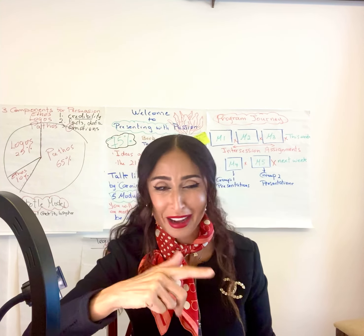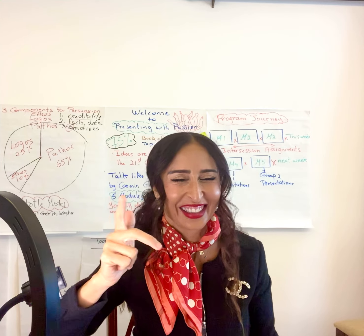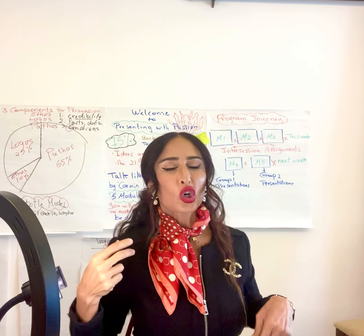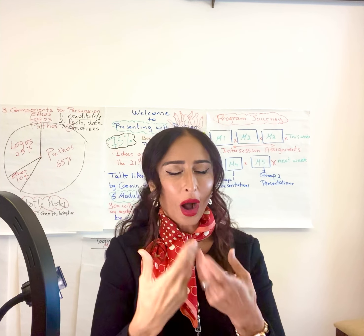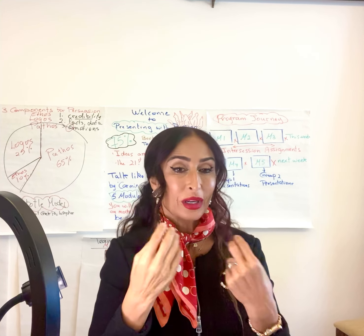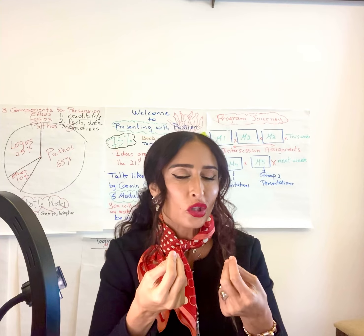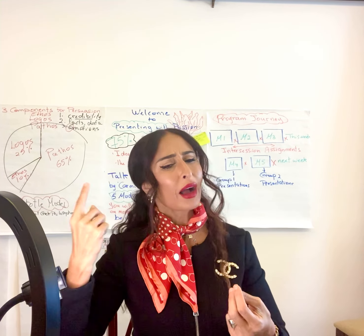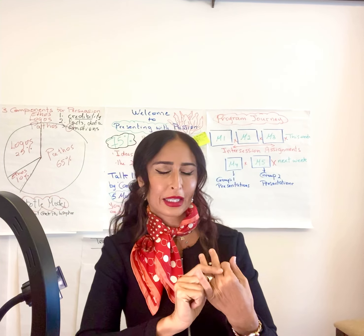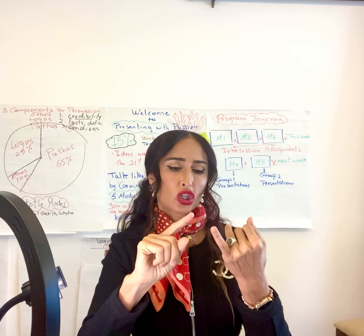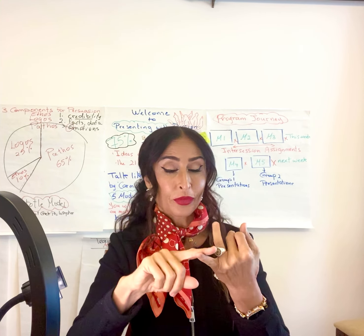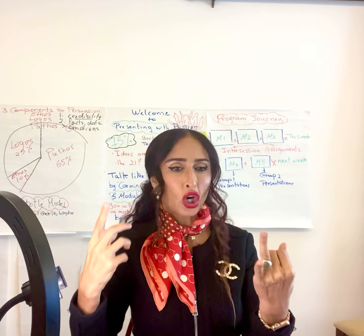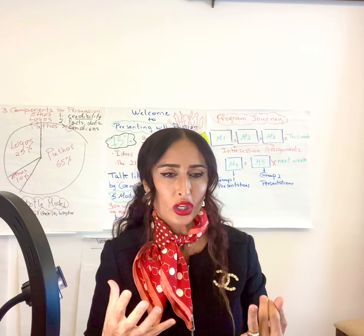CAB stands for Compelling Audience Benefit. You need to show them why this is important for them — the 'what's in it for me' factor. That's super important. That's part of your hook as well: 'I want to listen because these are my benefits.' So focus your introduction on the CAB and on how to hook and leave a big impression.